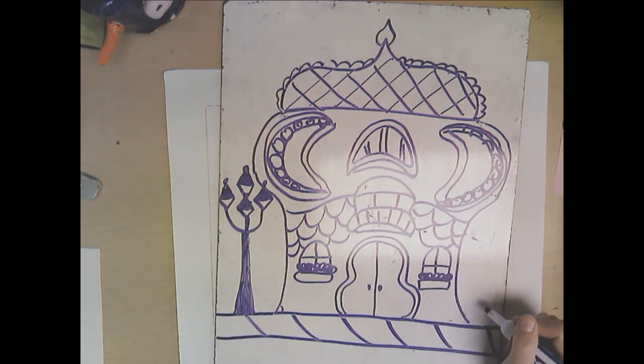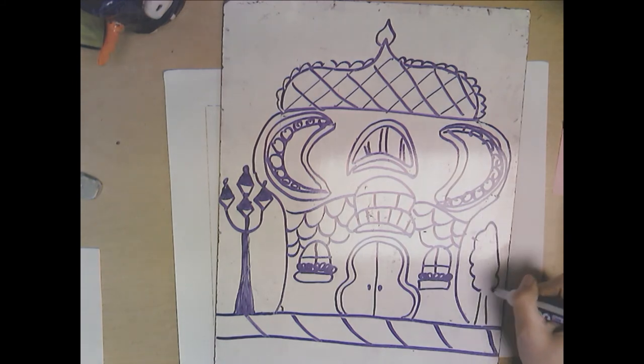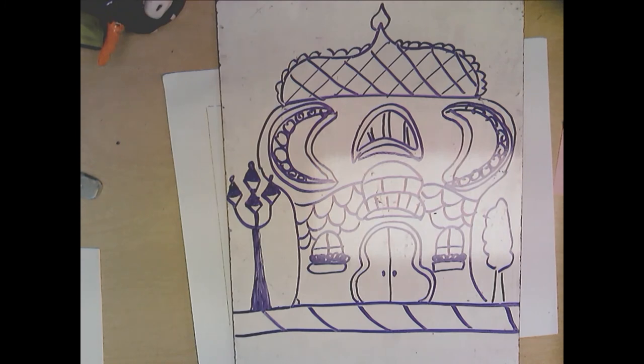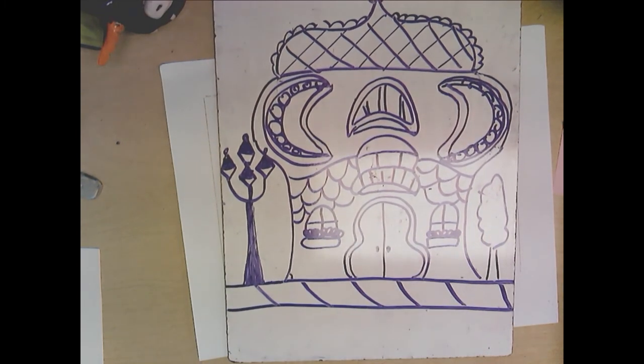Then you could draw whatever you wanted on the other side - you could draw a tree, bushes, whatever else you would see. Maybe a mailbox, trash can, whatever you would see in a city. Maybe I'll just make a little tree here. So here is a picture of a building in a very unique creative style.